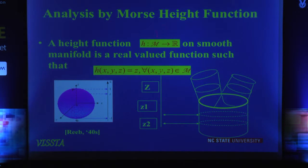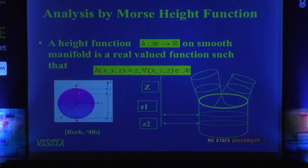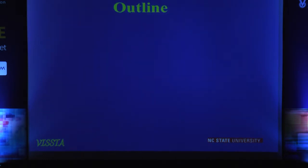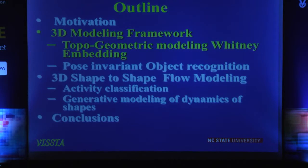So what is a Morse function? Subject to some technicalities — it has to be one-to-one, non-degenerate, et cetera — you define what is called the height function. The height function is exactly what it says: to each point on the manifold, you associate its height. You analyze that function, identify the topology of the underlying object, and you find that all the critical points basically define the topology of your object. For instance, this bifurcation will coincide with the critical point of this height function. That's like a two-minute introduction to Morse theory.